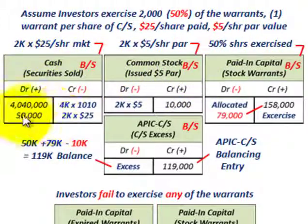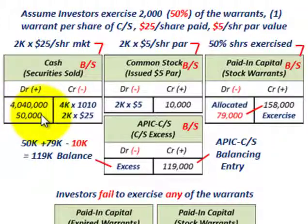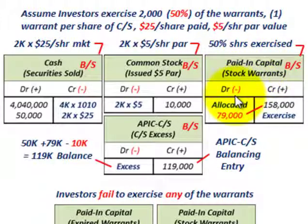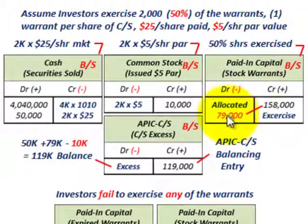To record this: 2,000 shares are being exercised at $25 per share, so we debit cash for $50,000. We credit common stock par for 2,000 shares at $5 par per share, equaling $10,000. For the paid-in capital for stock warrants account — since 50% of the warrants are being exercised — we debit (reduce) that account by $79,000, which is half of the $158,000 originally allocated to paid-in capital for stock warrants.